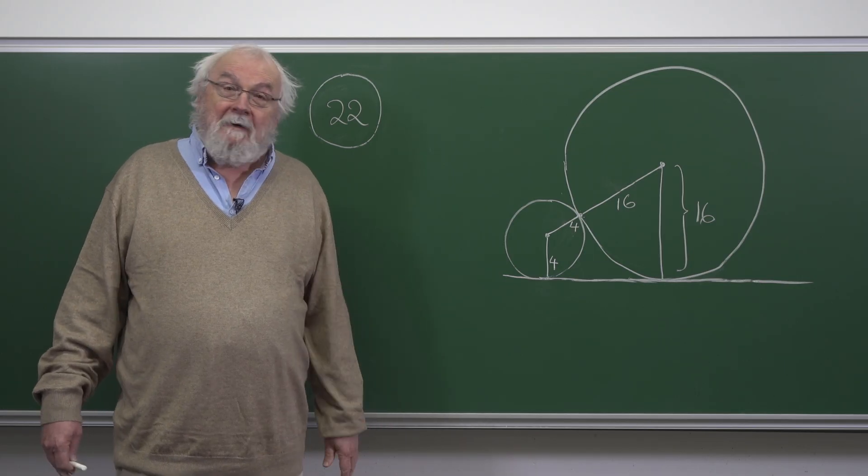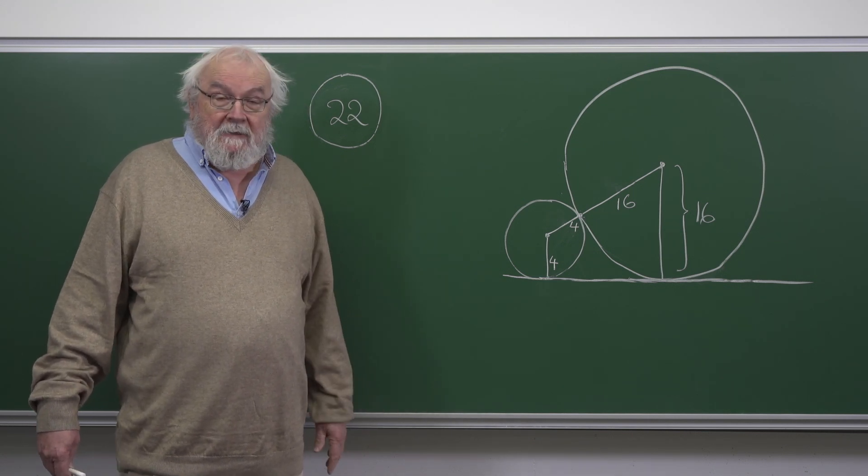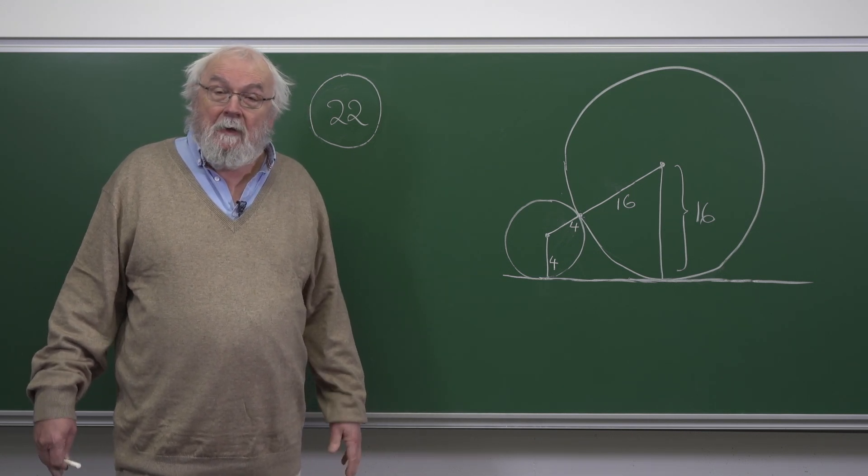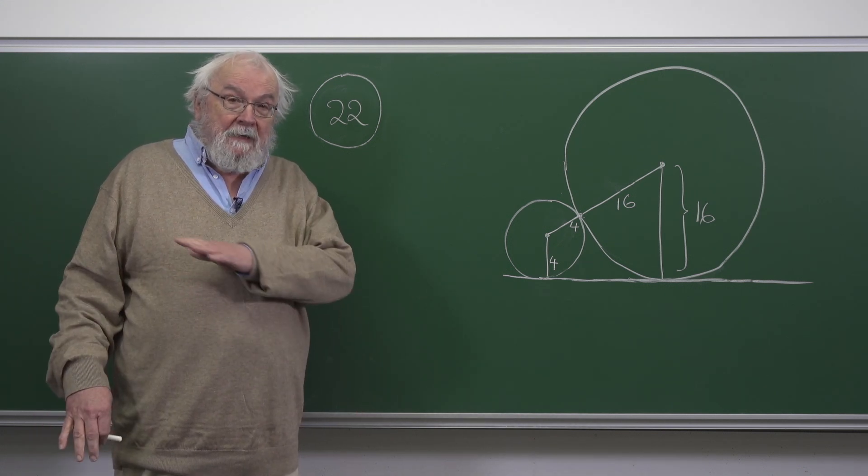This question concerns a pair of spheres of different sizes. One has radius 16, the other has radius 4, and they are in contact with one another. Both of them are resting on a plane.